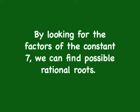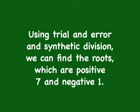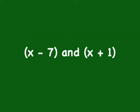By looking for the factors of the constant 7, we can find possible rational roots. The only factors of 7 are positive and negative 1, and positive and negative 7. Using trial and error and synthetic division, we can find the roots, which are positive 7 and negative 1. Now that we know the roots, we can find the factors based on x — your factors would be x - 7 and x + 1.